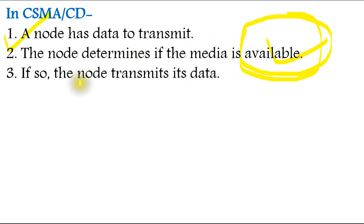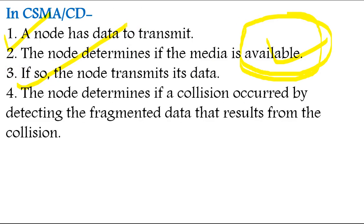The node determines if a collision occurred by detecting the fragmented data that results from the collision. This is the fourth step. If any collision is happening, it will check it.